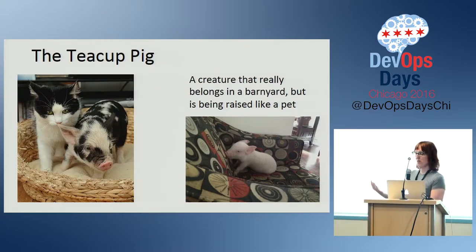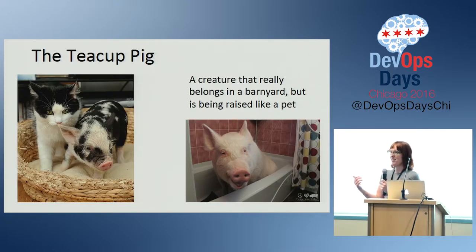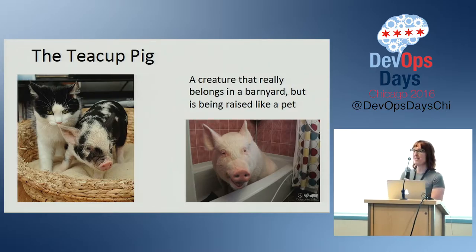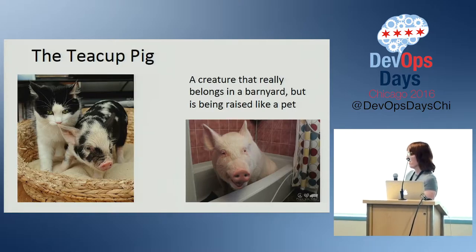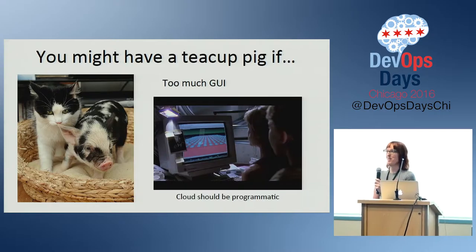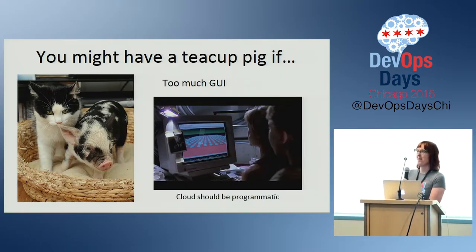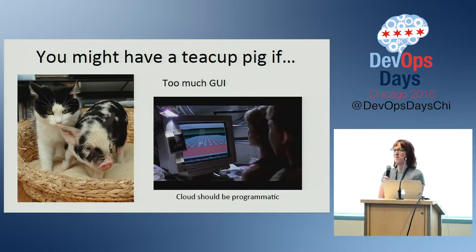So if we rush into the cloud, we might get a teacup pig. We might say this is livestock — it's fundamentally replaceable. But what happens when you are feeding this creature by hand and it grows to be a 500-pound miniature pig? Do you think you could keep that guy off of your furniture?